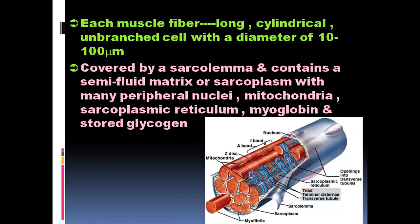Each muscle fiber is a long, cylindrical, unbranched cell with a diameter of 10 to 100 micrometers. It is covered by a sarcolemma and contains a sarcoplasm with many peripheral nuclei. Skeletal muscles are multi-nucleated cells. They have many mitochondria — called sarcosomes in muscle cells — as well as sarcoplasmic reticulum (the endoplasmic reticulum of muscle cells), myoglobin for oxygen storage, and glycogen as an energy source.